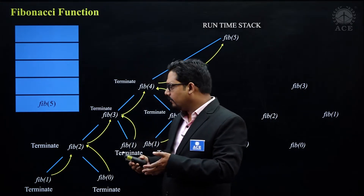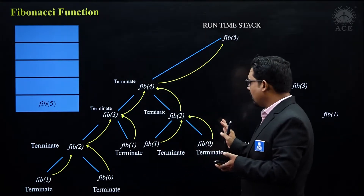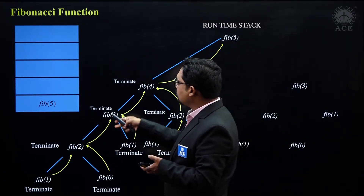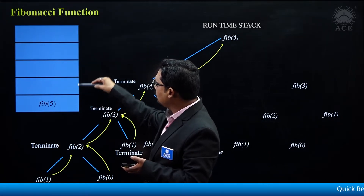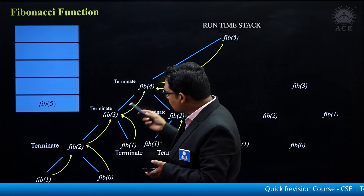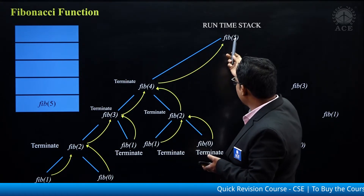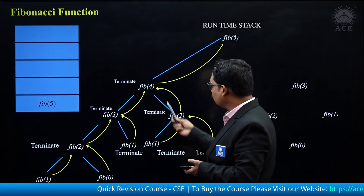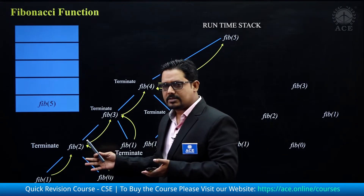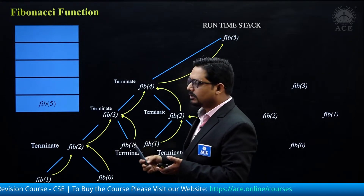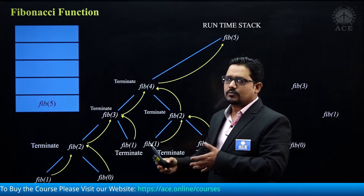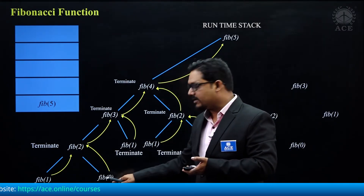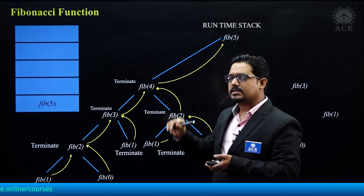Now I have already completed half of the part, and I have only utilized 1, 2, 3, 4, 5 spaces in the stack. Rest of the time, there are 1, 2, 3, 4, 5, 6, 7, 8 activations in total for the Fibonacci function, but we have utilized only 5 spaces in the stack, because when one call terminates and we go for the next call, the same space is again utilized.